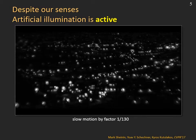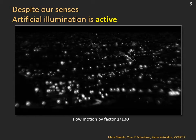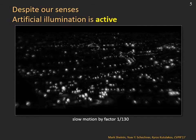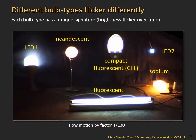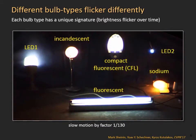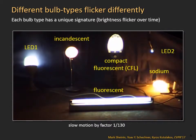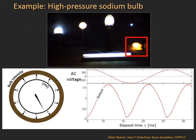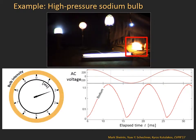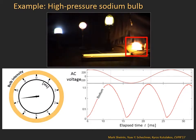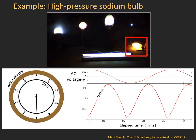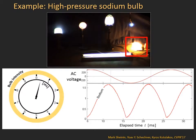The lights in the scene flicker because most of the bulbs are powered by the electric grid. Each bulb type has a unique flicker signature in time. For example, here is the signature of a sodium bulb — these bulbs are common in street lighting. The spinning clock illustrates the periodic nature of the bulb's flicker. A bulb's flicker cycle lasts one hundredth of a second.